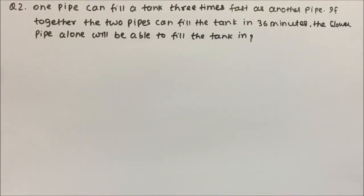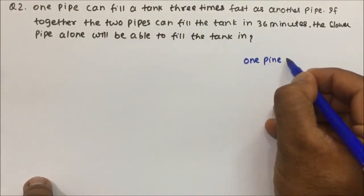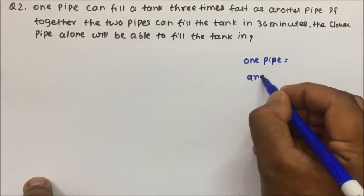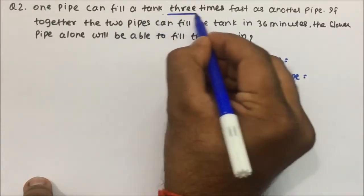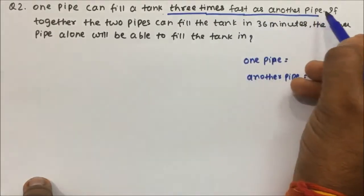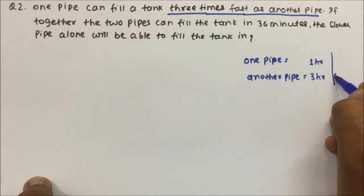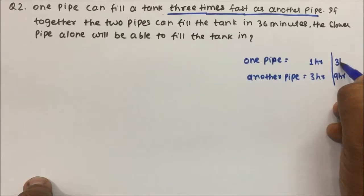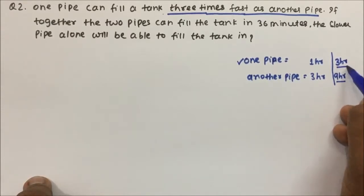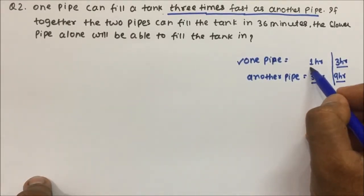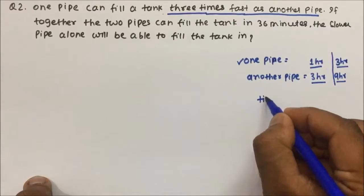Question 2: One pipe can fill a tank three times as fast as another pipe. If one pipe takes 9 hours, the other takes 3 hours; if one takes 3 hours, the other takes 1 hour — because it is three times fast, so it takes less time. This ratio is given in terms of time.